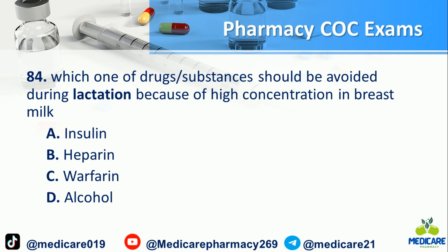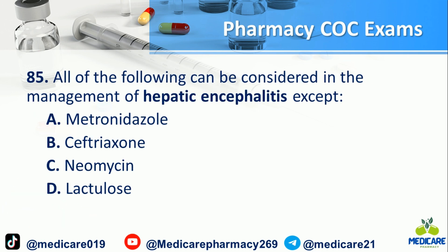Number 84: Which one of the following drugs or substances should be avoided during lactation because of high concentration in breast milk? a. Insulin. b. Heparin. c. Warfarin. d. Alcohol. The answer is D.